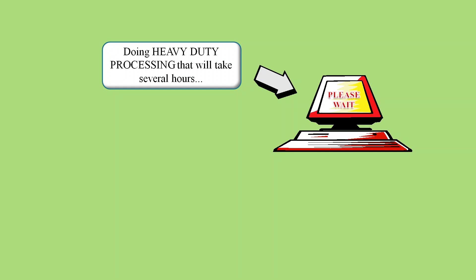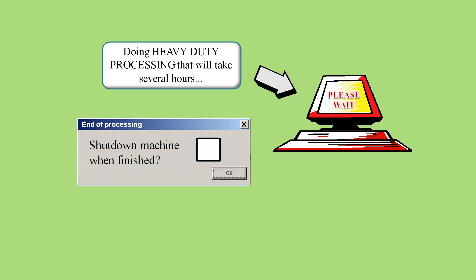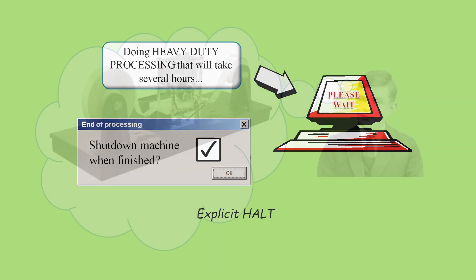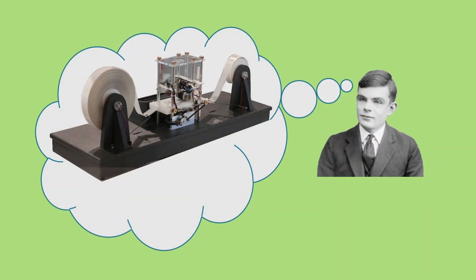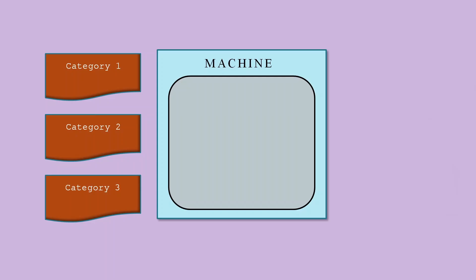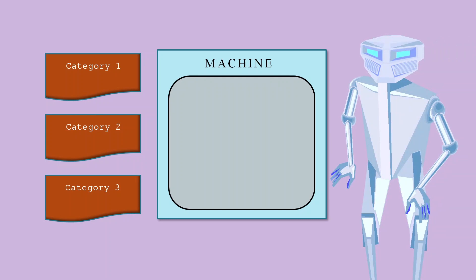Now is a good time to have a quick discussion about halting. Some heavy duty computer programs that are going to take a few hours to run might prompt you if they should shut down the machine when it's finished. If you say yes, the software will explicitly cause the machine to halt, which is very different from just ending its processing. Indeed, even with Alan Turing's imagined computer, which we call a Turing machine, the halt state is explicitly selected.